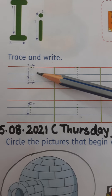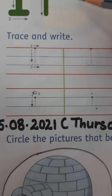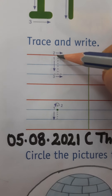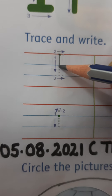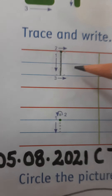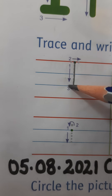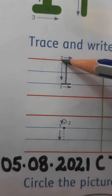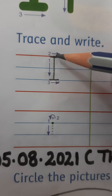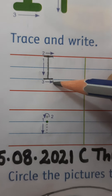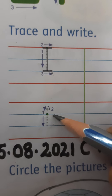First the capital I and then small i. For capital I, we have to make one standing line from the red line to the second blue line. There is also a small sleeping line on the red line and one on the second blue line. This is the formation of capital I. And for small i children, we have to make it in between the blue lines.